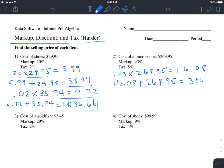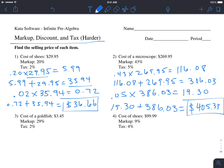Then we tax that amount. We do 0.05 times $386.03, which equals $19.30. We add that on top: $19.30 plus $386.03. Adding those together, we get a total of $405.33, and that's our final answer for number two.